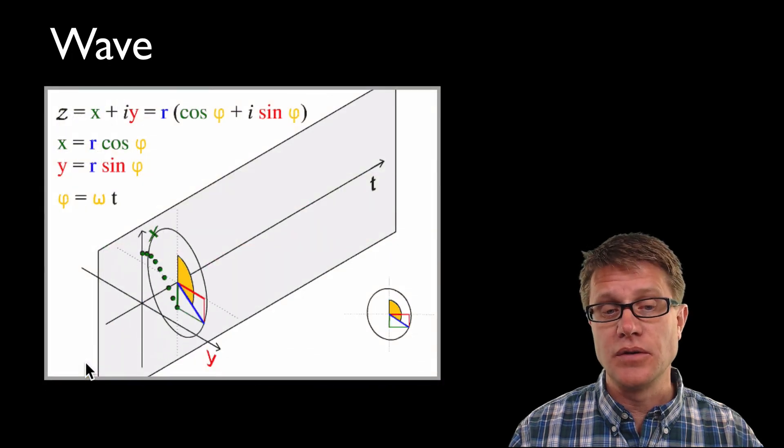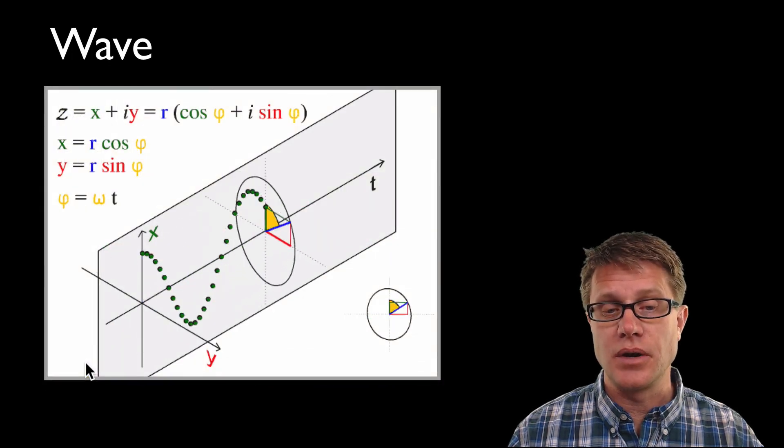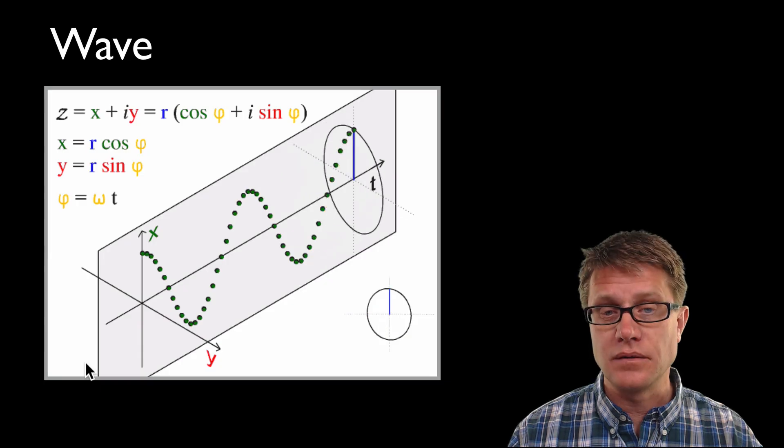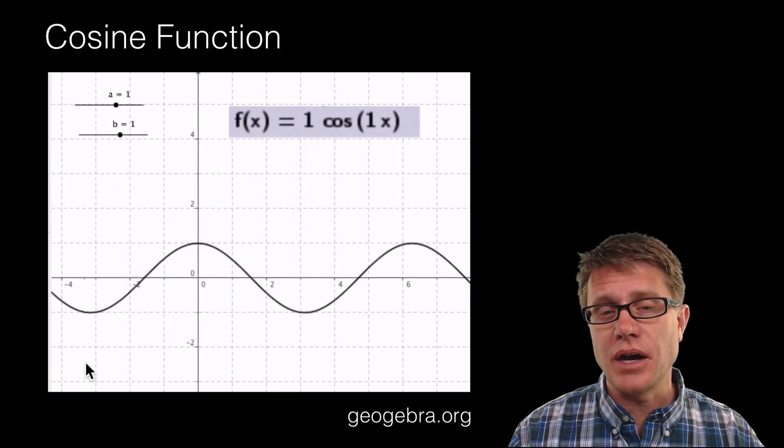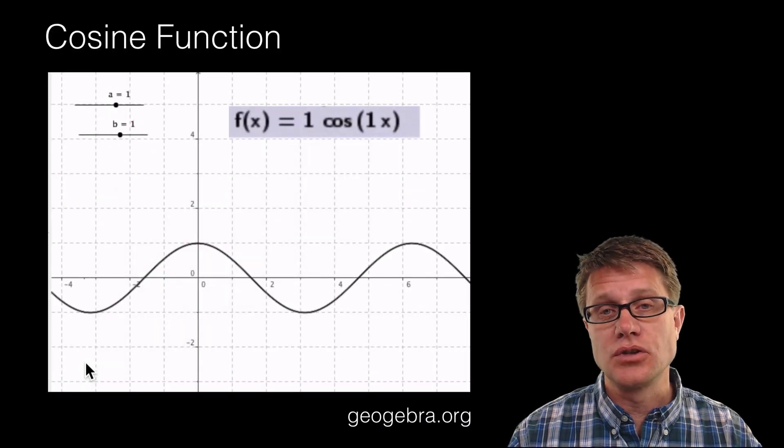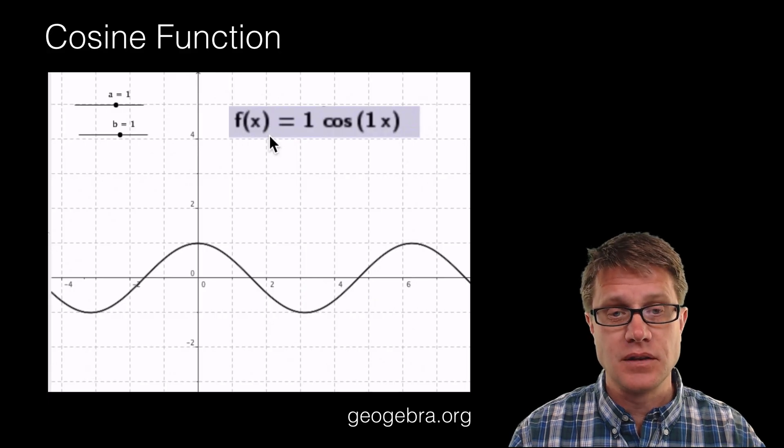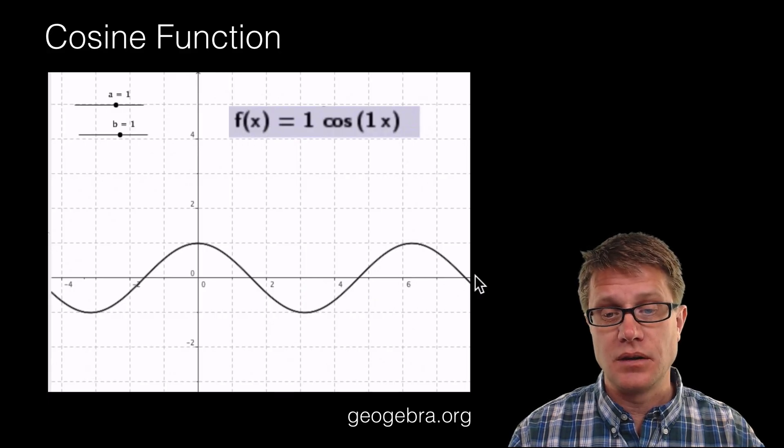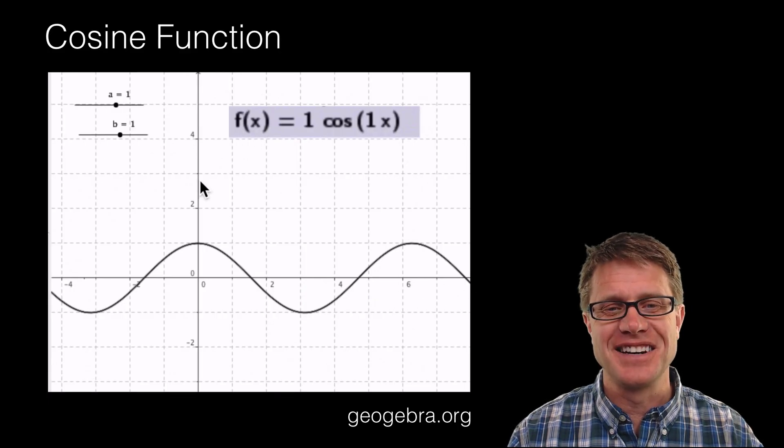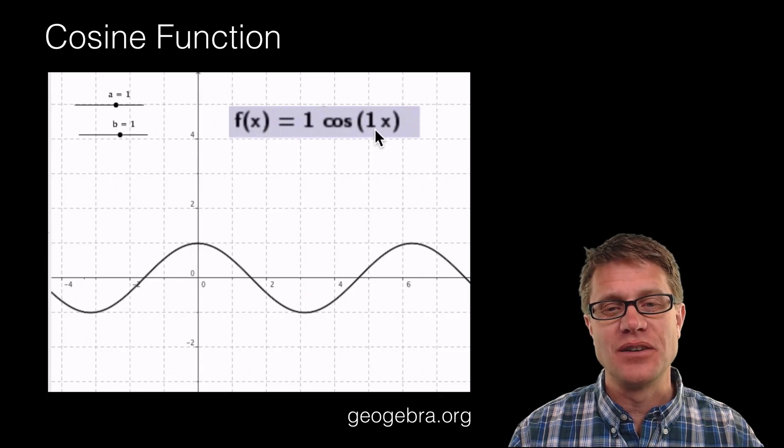And we could even do this using math. We could take a unit circle and move it over time and we are going to generate a wave. And we could even explore that in a little more detail. So this is a GeoGebra simulation. So what I have got here is f of x. So x is going to be on the x-axis and then f of x is here.